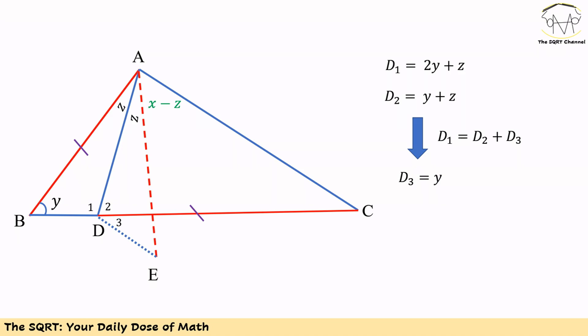We now add a new line DE, shown as a dotted blue line. This line is drawn so that D2 plus D3 equals D1, and it intersects the angle-splitting line at point E. Since D1 equals 2Y+Z and D2 is an external angle of triangle ABD, D2 equals Z plus Y, so D3 equals Y.